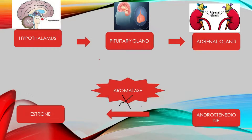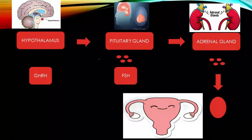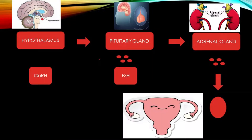When estrone is not produced in the body, due to low estrogen the hypothalamus produces GnRH (gonadotropin-releasing hormone). Because of this, the pituitary gland releases FSH — follicle stimulating hormone. This follicle stimulating hormone is further responsible for the ovulation of eggs. When an egg is produced, that is a good chance for fertility.